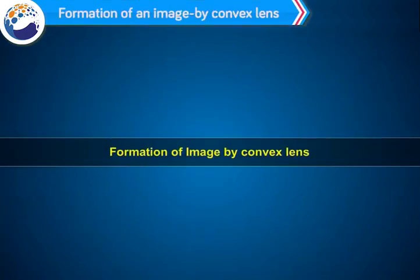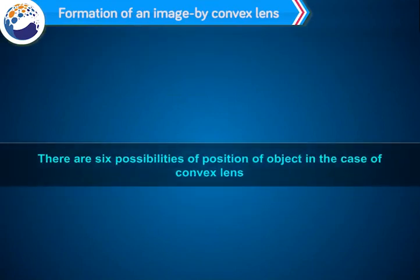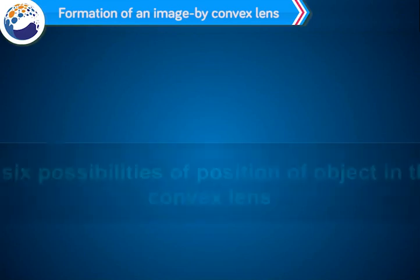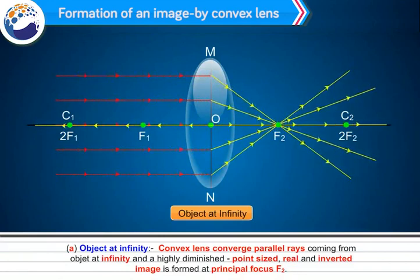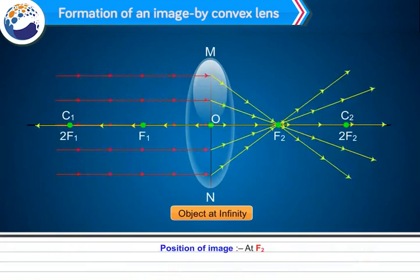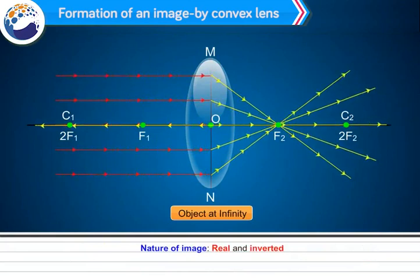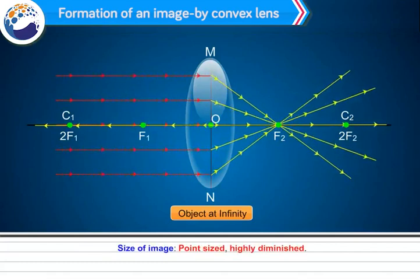There are six possibilities for the position of an object in the case of a convex lens. When the object is at infinity, the convex lens converges parallel rays and a highly diminished, point-sized, real and inverted image is formed at the principal focus F2. Position of image: at F2. Nature of image: real and inverted. Size of image: point-sized, highly diminished.